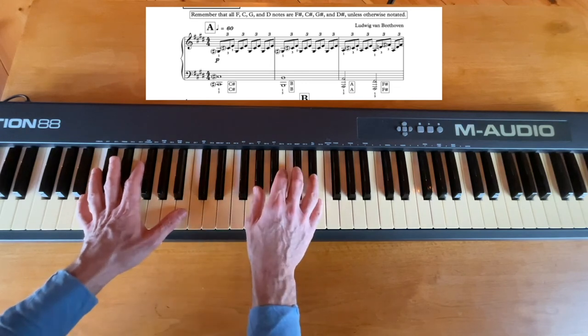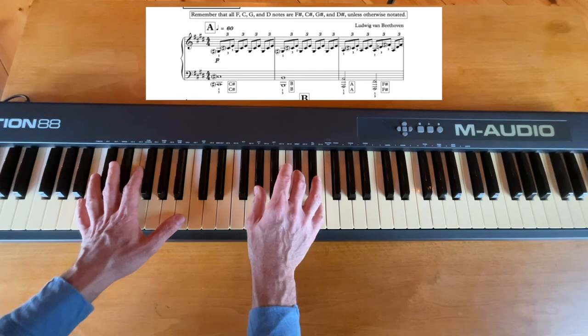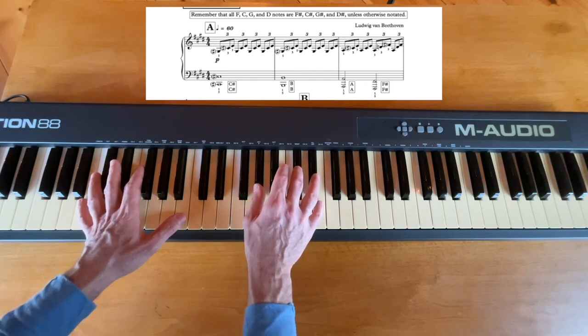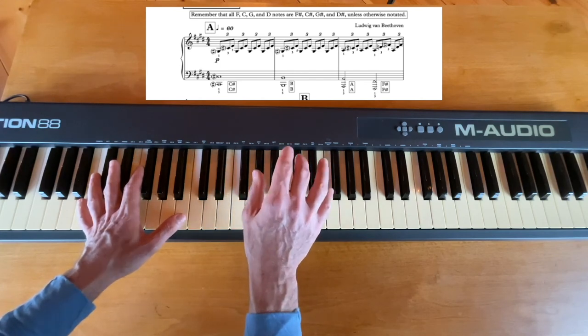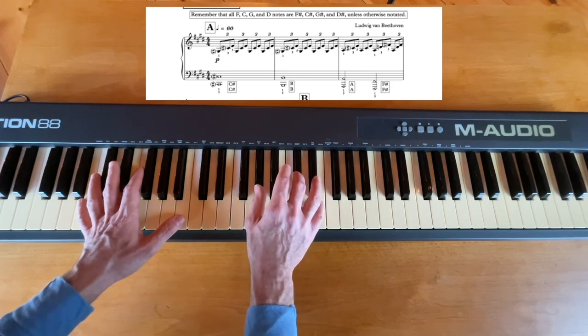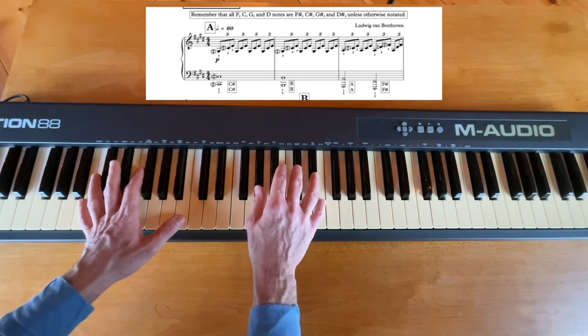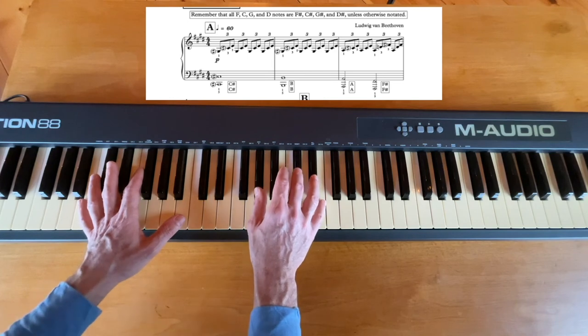And then together, as with the previous measure, this kind of intermediary step, you'll play the right hand as quarter notes while counting in your mind or out loud the triplets. It will sound like this.